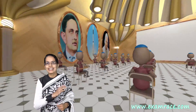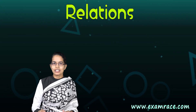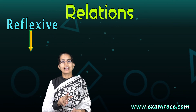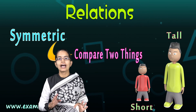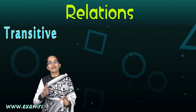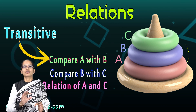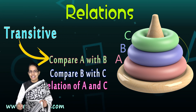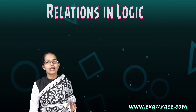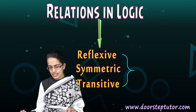Welcome. Let's begin one of the very interesting topics in logic, and that is relations. Now three simple relations: the first is reflexive, where we understand with oneself; the second is symmetric, where we compare two things; and the third is transitive, where we compare A with B and B with C, and then the relation of A and C. When you have all three, that is what is known as equivalence.